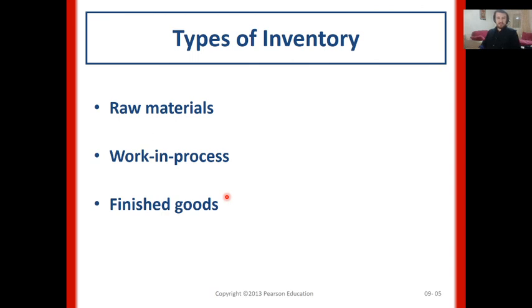There are typically three types of inventories. Raw materials are materials which have not been processed before. Work-in-process items or goods were processed before but are not finalized from the perspective of end customers. And finished goods are ready to deliver to customers — customers could be individual end customers or another player in a supply chain network.